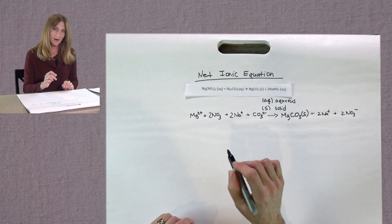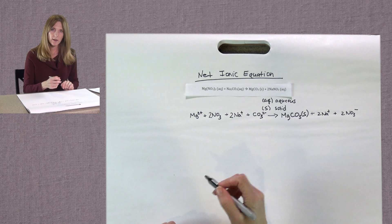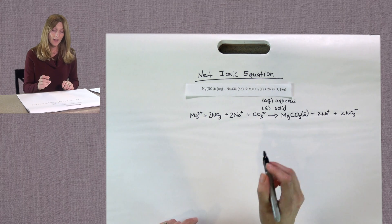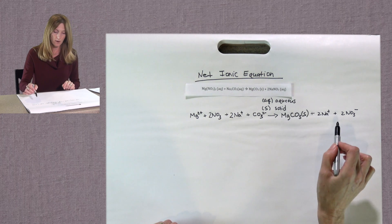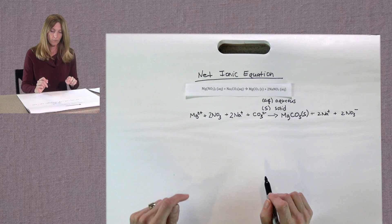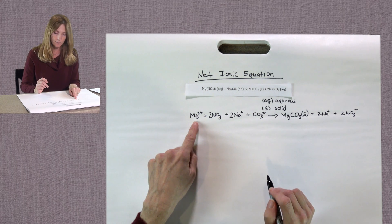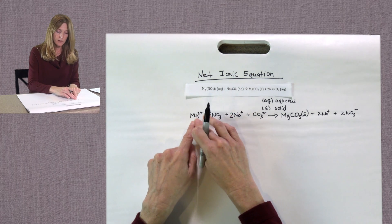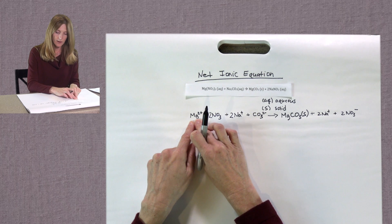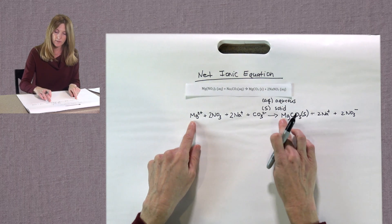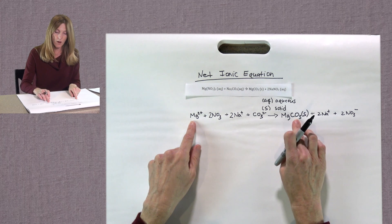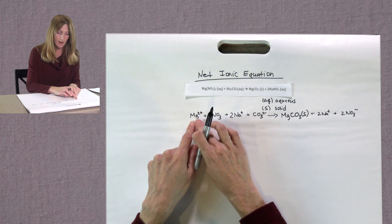To write a net ionic equation, you will erase or subtract out any ion that is present in both the reactants and the product side. So let's start by looking at magnesium is on the reactant side. Is magnesium shown by itself on the product side? It's not, it's involved in an ionic compound. So we're going to leave that ion.